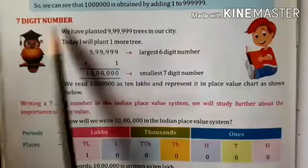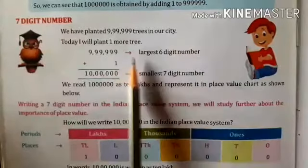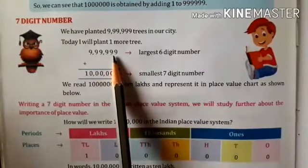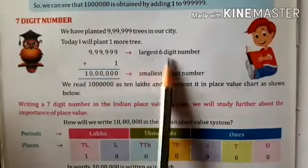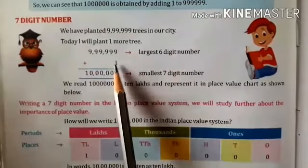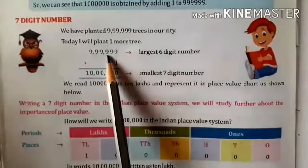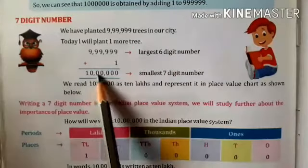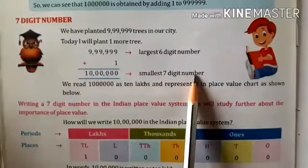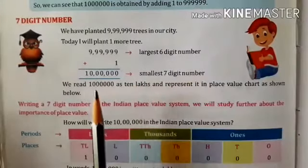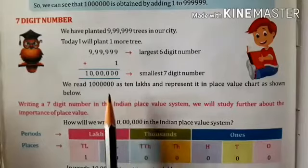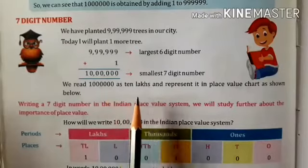7 digit number. All of you know that 9,99,999 is the largest 6 digit number. If we add 1 with this number, we get 10 lakh which is the smallest 7 digit number. So students, let's see how we can represent 10 lakh in the place value chart.